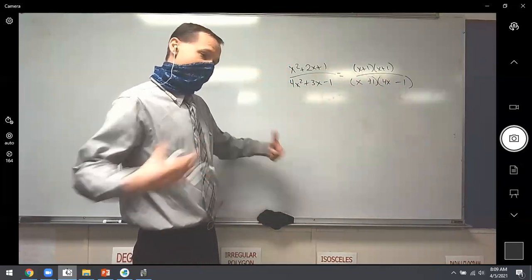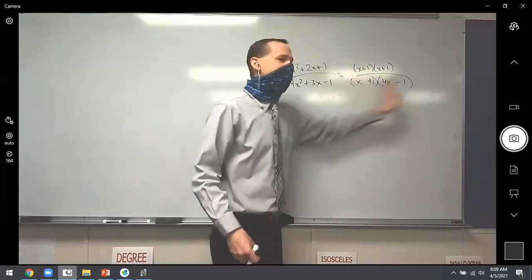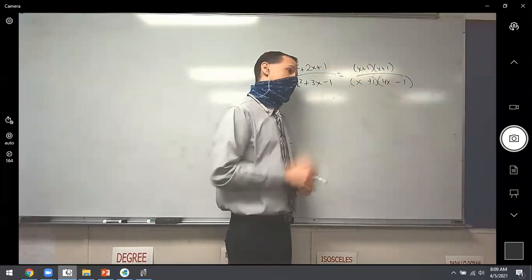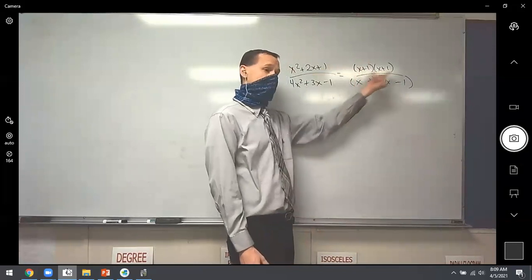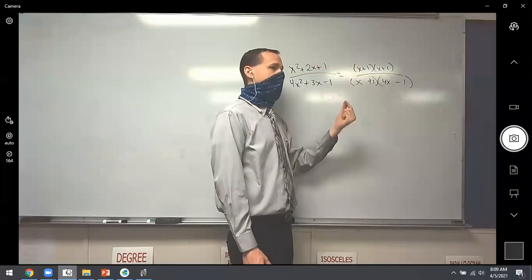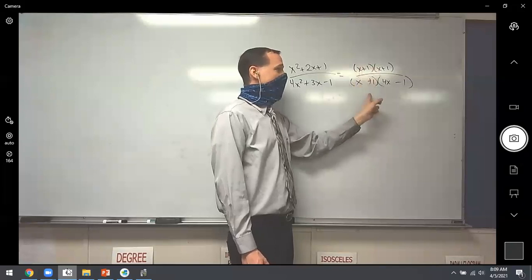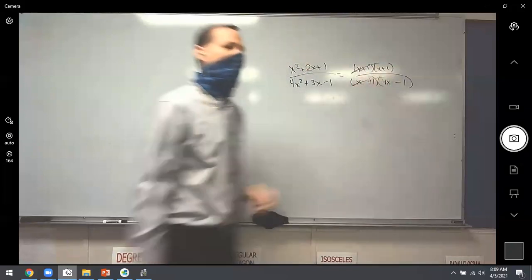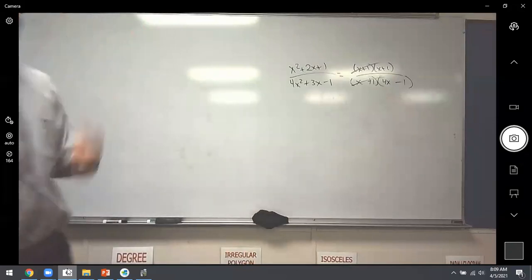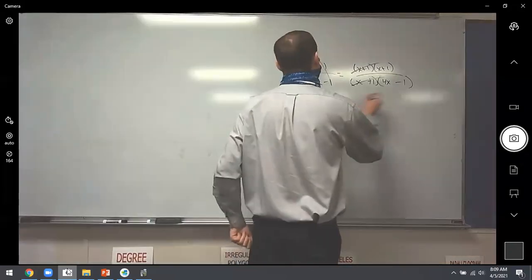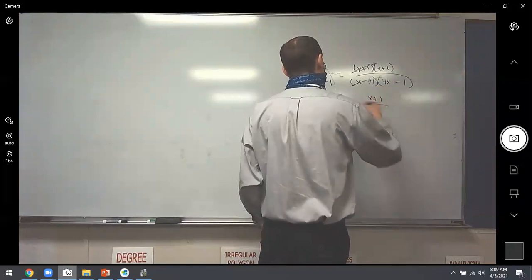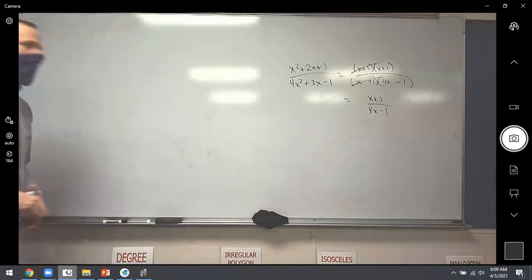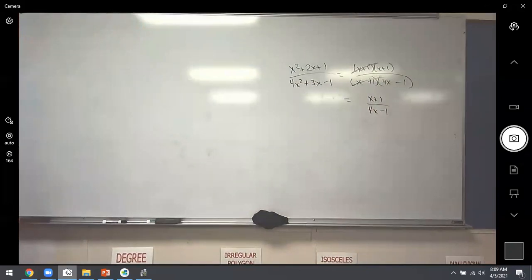Once factored correctly, we look at what's on top and bottom. There's an (x+1) on top — actually two of them since the top is (x+1)². One of the (x+1) factors on top will cancel with one on the bottom. The simplified result is (x+1) over (4x−1).